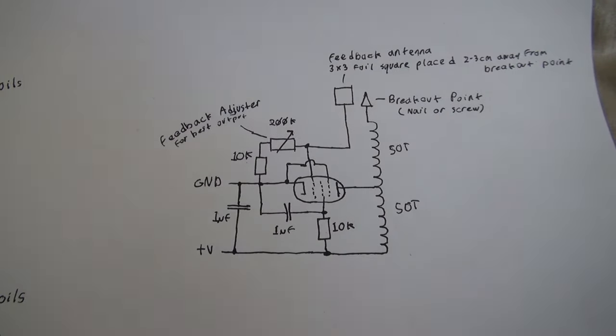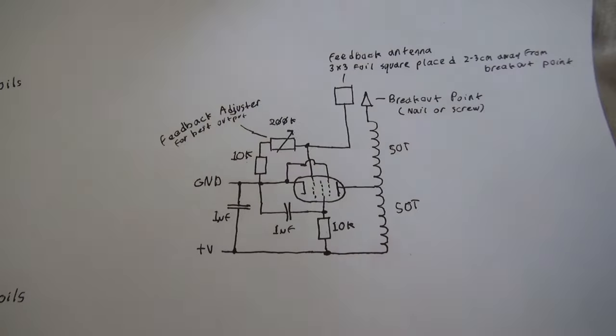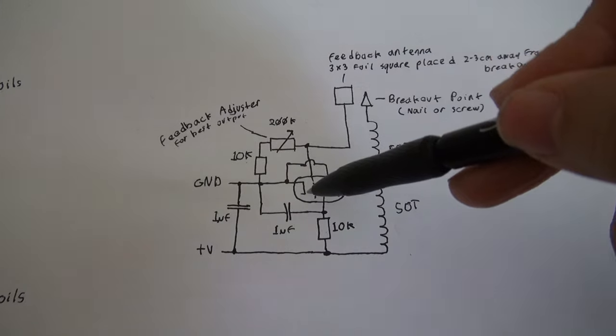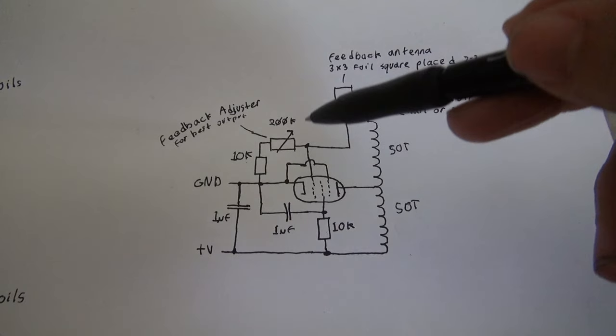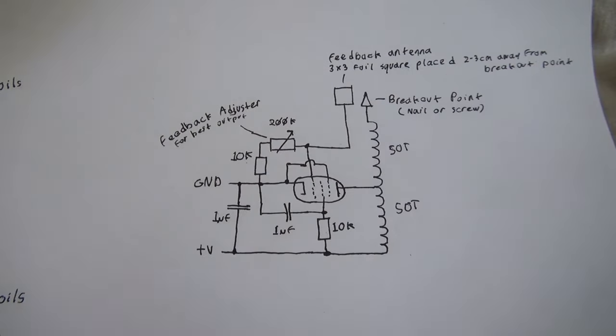Maybe every 10 turns. And find that sweet spot of the turns ratio. So how this circuit works is by feedback. So it's got a little antenna here, positioned near the breakout point. And that's connected straight up to the control grid of the tube. And I can adjust how much feedback the tube gets with these two resistors here. So I can adjust it so it doesn't get too much feedback, or too little feedback. I can get it in the Goldilocks zone, where it's just right.